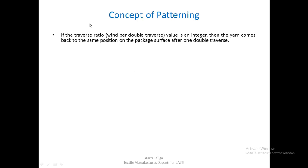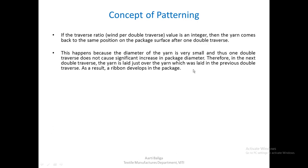The concept of patterning: if the traverse ratio or the wind per double traverse value is an integer, then the yarn comes back to the same position on the package surface after one double traverse. Patterning occurs when the traverse ratio is an integer value. This happens because the yarn diameter is so small that one double traverse does not significantly increase the package diameter. Therefore, in the next double traverse, the yarn is laid just over the yarn from the previous double traverse, and as a result, a ribbon develops in the package — this problem is known as patterning.